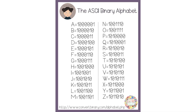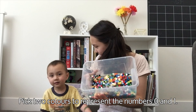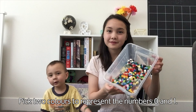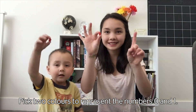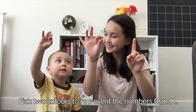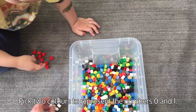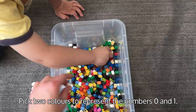First up, we're going to learn binary with LEGO. If you'd like to print out this printable that's on screen right now, check it out in the description below. First, pick two colors to represent the numbers 0 and 1. Small LEGO bricks work best for this.